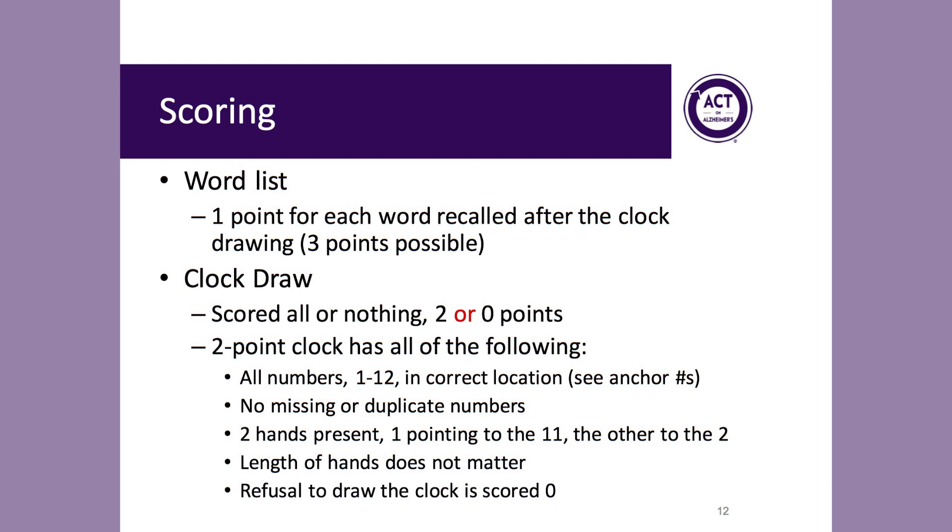A full credit clock includes all of the numbers, 1 through 12, in their correct location. To evaluate location, look at the anchor numbers, the 12, 6, 3, and 9, to make sure that they are roughly in their correct locations. There can be no missing or duplicate numbers. Two hands of the clock must be present, one pointing to the 11 and the other to the 2. It is important to recognize that the length of the hands for Mini-Cog scoring does not matter and is not incorporated into scoring. This is because many patients will draw the hands in haste and not be specific with regard to length. Refusal to draw the clock at all is scored zero points.